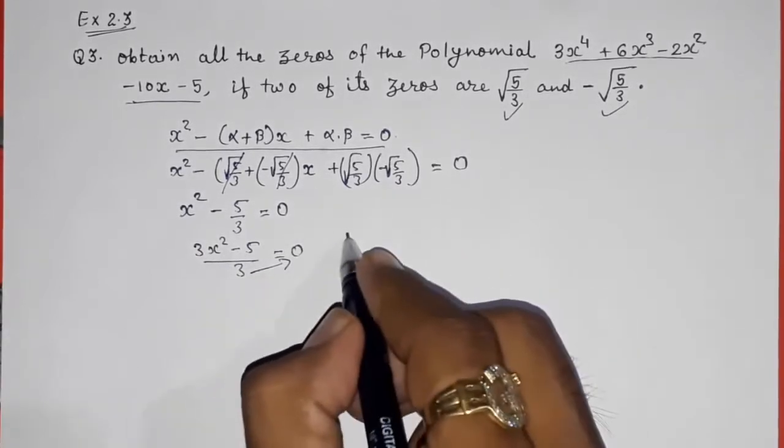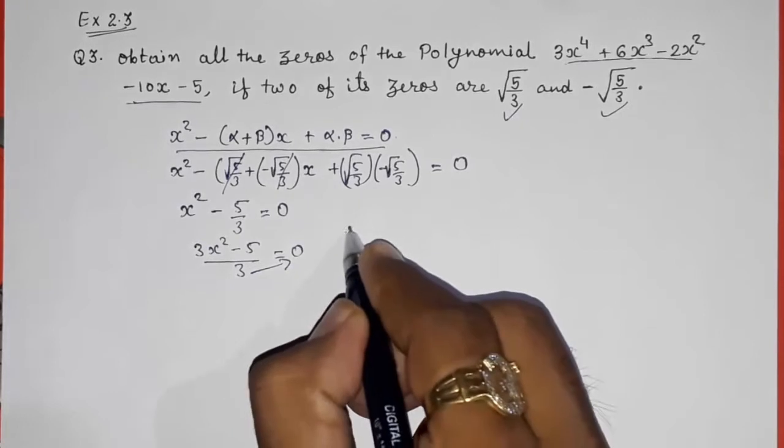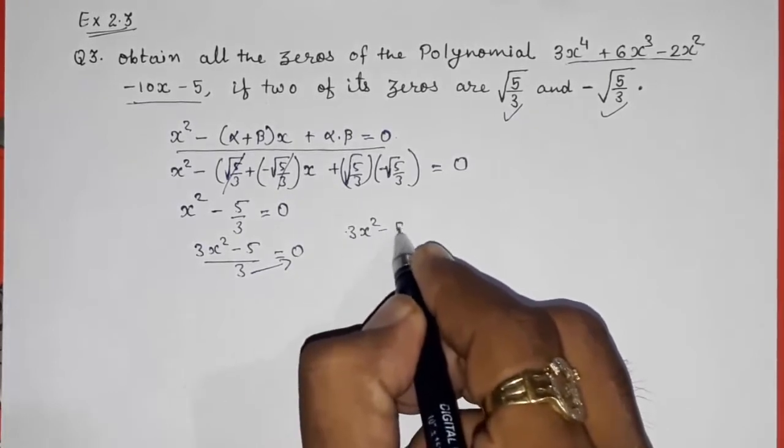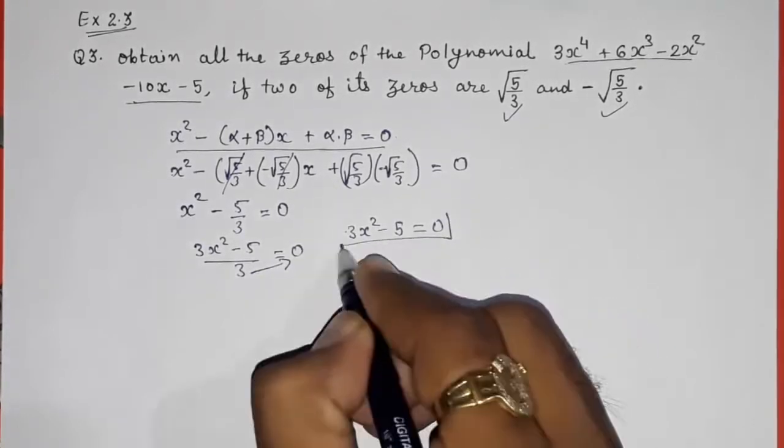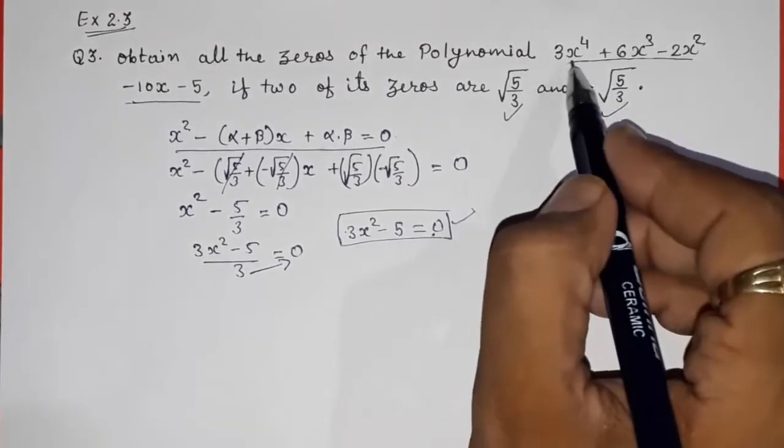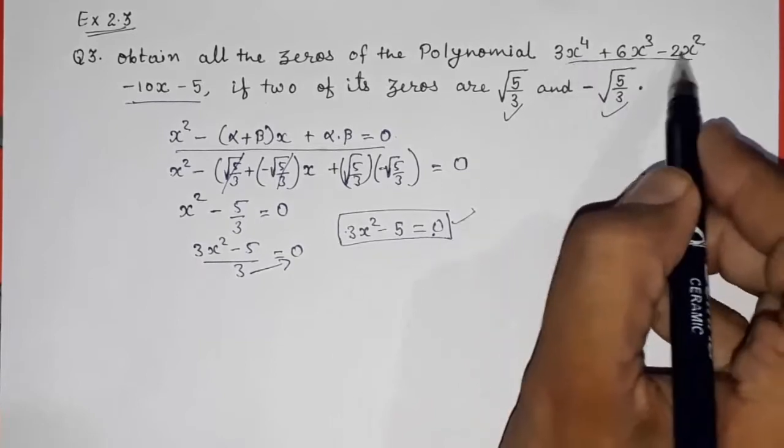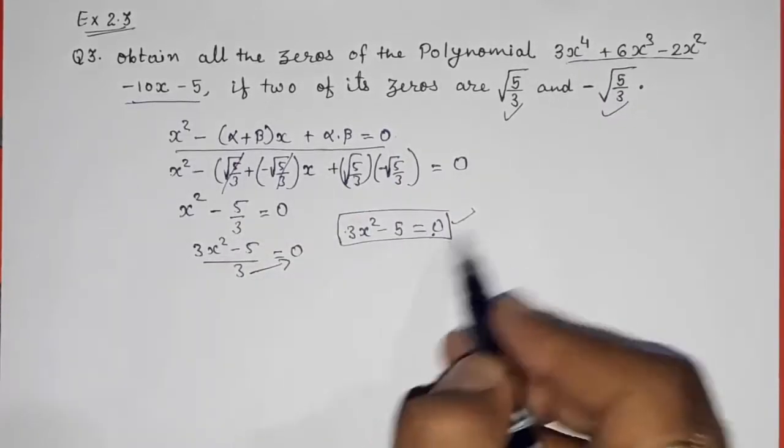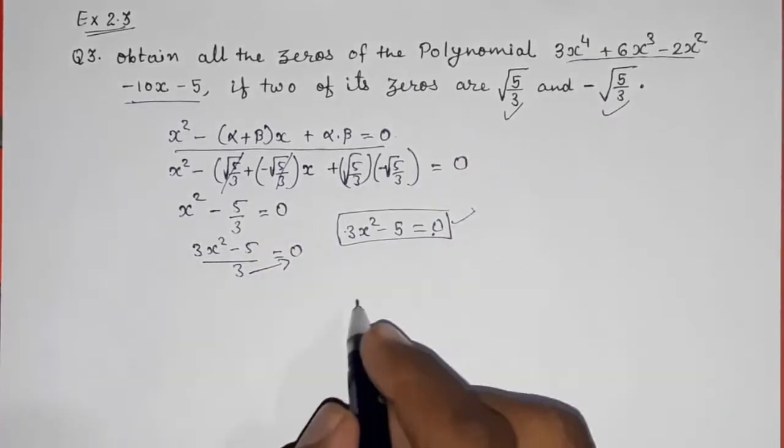Now take this 3 here, so you will get 3x square minus 5 is equal to 0. This is your quadratic. Now with the help of this quadratic equation you have to find out the other zeros. So first we are going to divide this polynomial with this quadratic. Let us divide it.